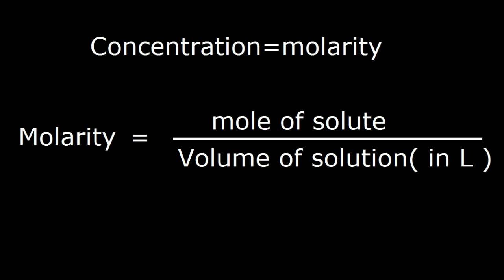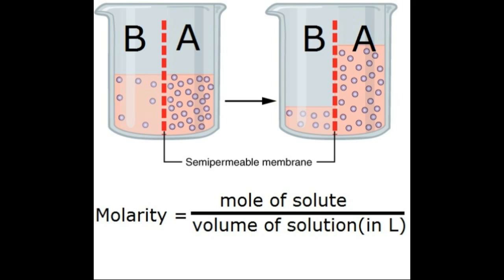For convenience, let concentration in this case be molarity. So suppose if the number of moles of solute in side A increases, then the solvent from side B must move toward A to increase the volume of solution at A, maintaining the concentration of each side to be equal.